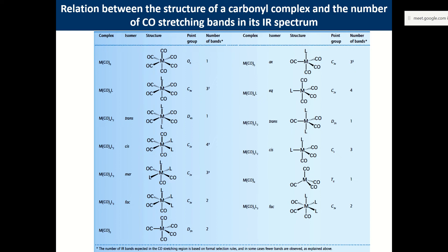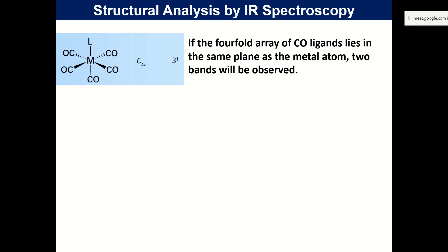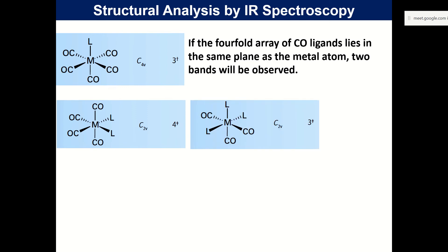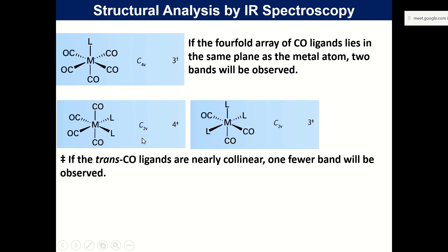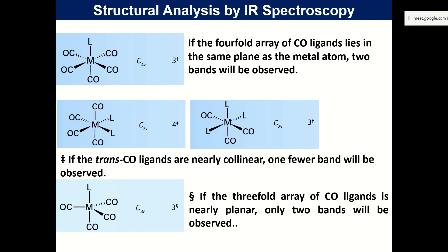This applies to carbonyl bands but is true for any other complex - it is a symmetry-related principle applicable to any metal-ligand complex. Using carbonyls as examples, we are learning a basic feature important for all other complexes. In the special case of fourfold symmetry with co-ligands in the same metal plane, two bands are observed. For trans collinear CO ligands, one fewer band is observed, as seen in cyclopentadienyl metal-ligand complexes.